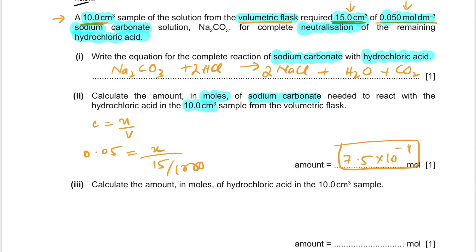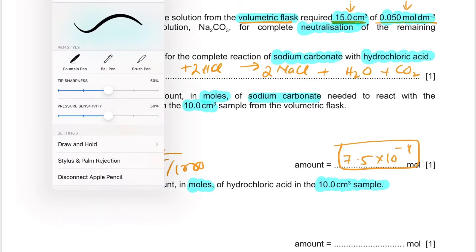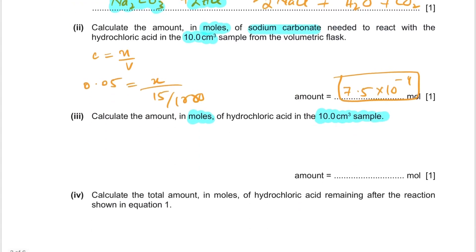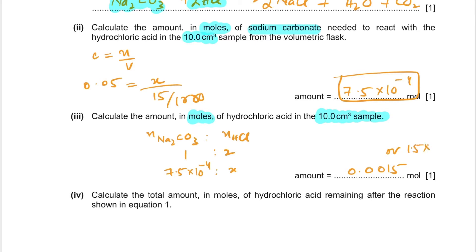Now calculate the moles of HCl in the 10 cm³ sample that reacted with sodium carbonate. From the balanced equation, the molar ratio of Na₂CO₃ to HCl is 1:2. So moles of HCl = 2 × moles of Na₂CO₃ = 2 × 7.5×10⁻⁴ = 1.5×10⁻³ mol.